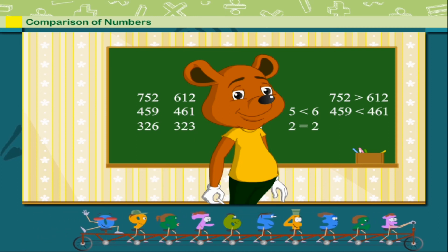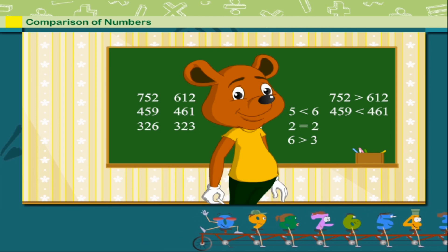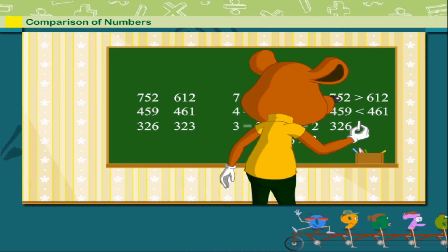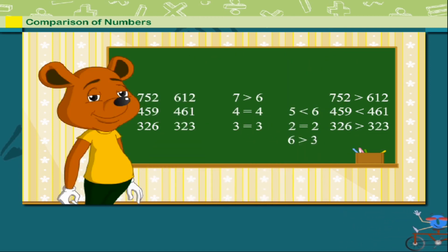Toby compares the ones and finds six is greater than three. So, three hundred and twenty-six is greater than three hundred and twenty-three. Good shoot, Toby!